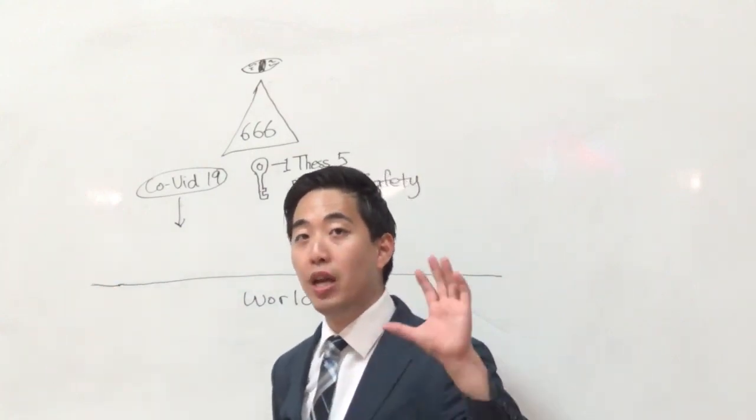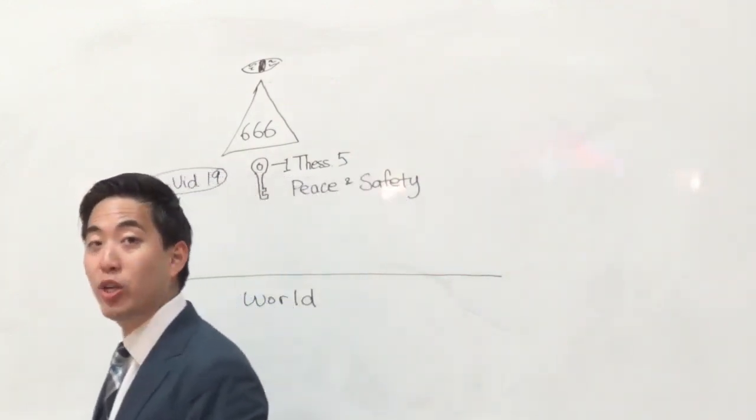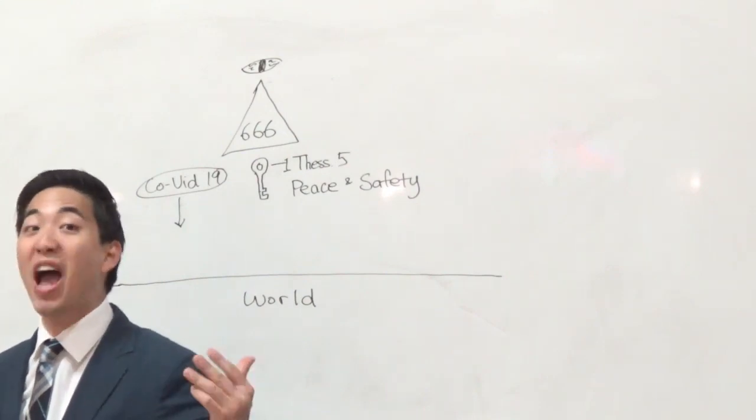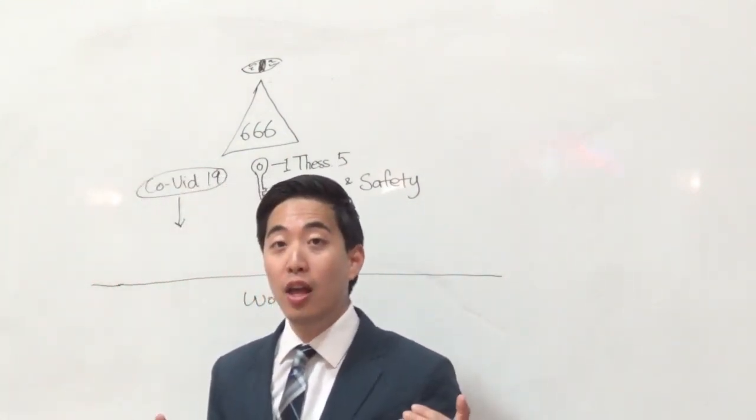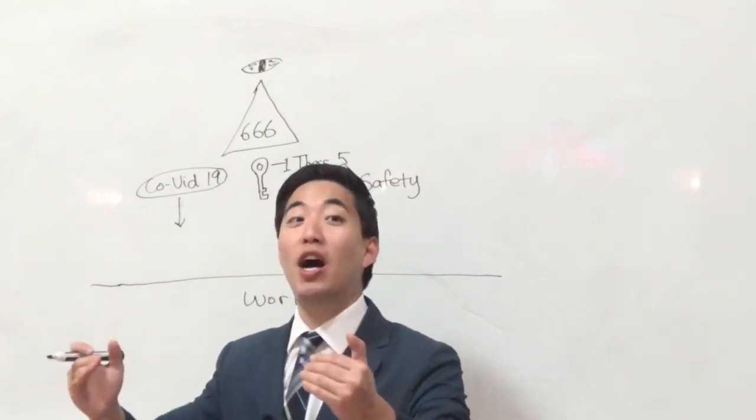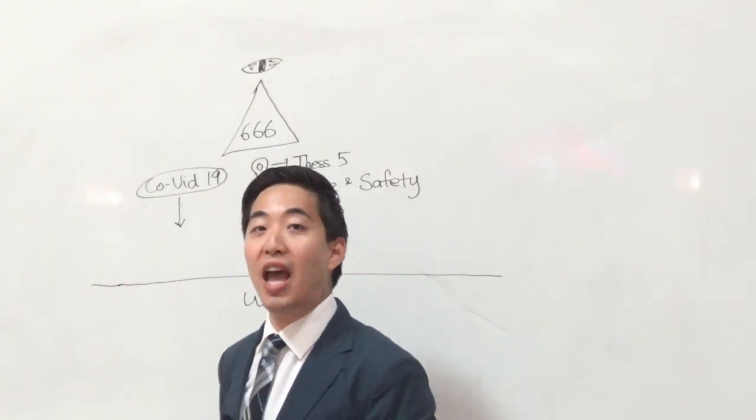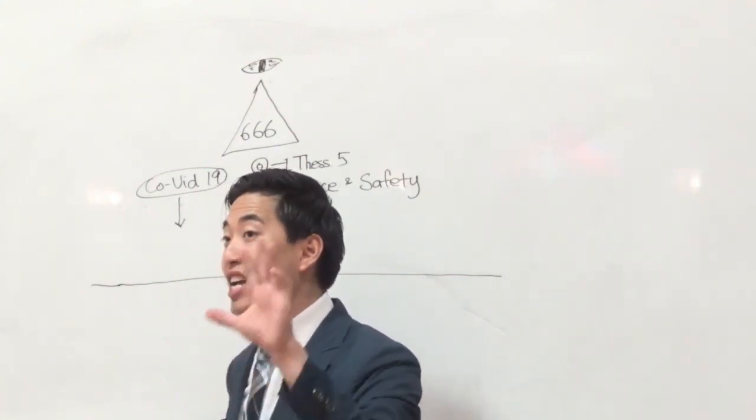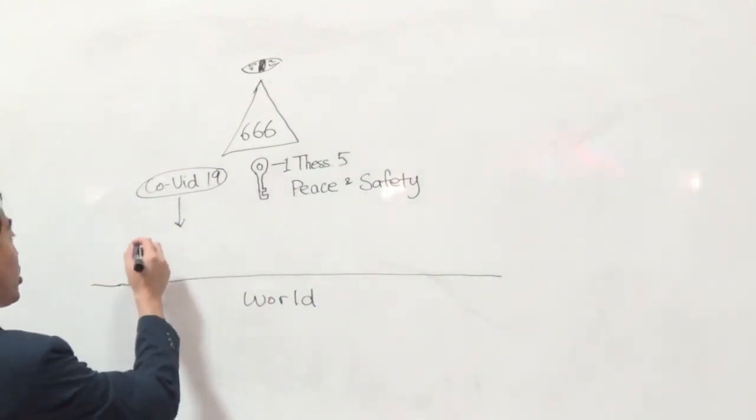I mentioned to you in other videos where the black pope, the Jesuit general, mentioned that he does not believe things will go back to normal. He believes that if we don't change now, then the next one will be worse. Bill Gates also mentioned that there will be another rising situation. You see over here this is getting really bad where there's going to be future pandemic situations.